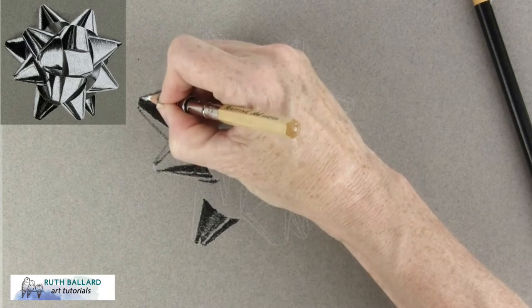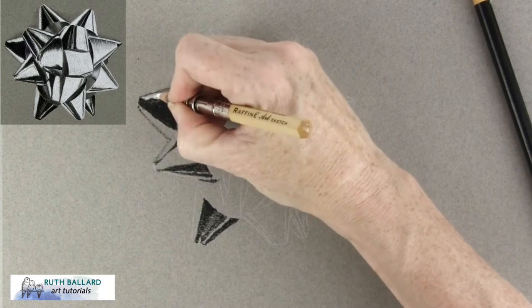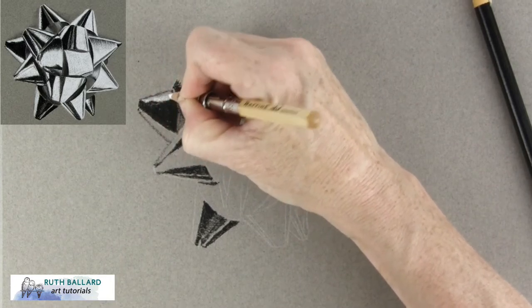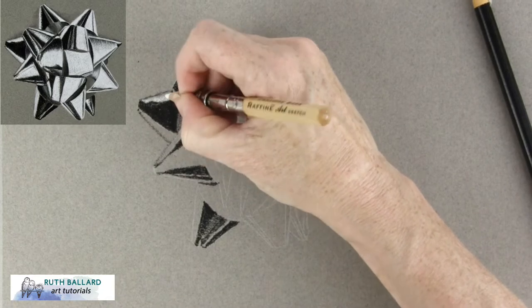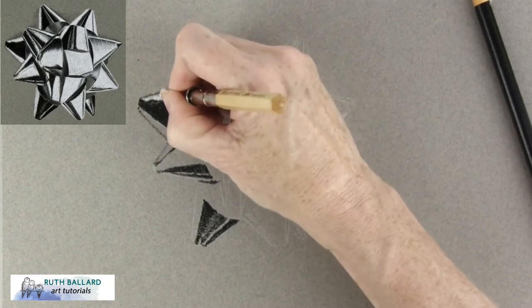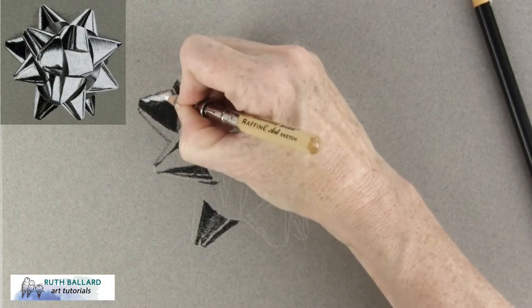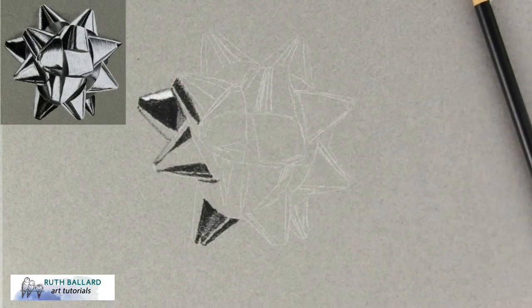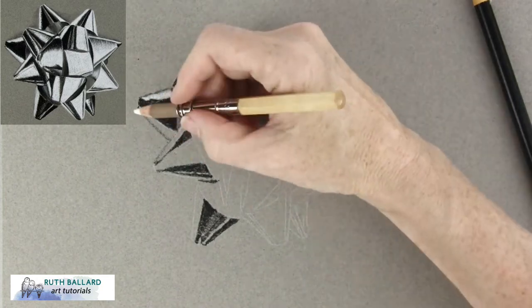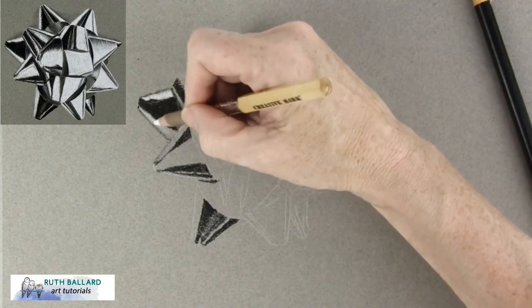At this point I'm just really looking at the shapes and they're a series of triangles. Establish your darkest values first. The General's white charcoal is an invaluable tool and it's really opaque. It's mostly used for highlights but in this exercise I'll use it to cover large areas.